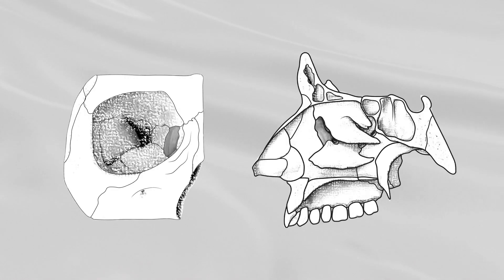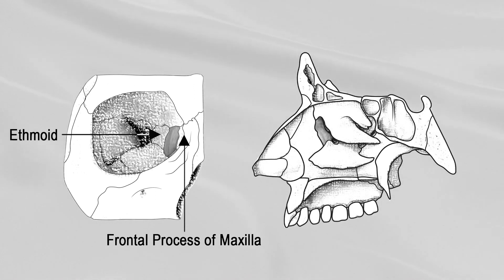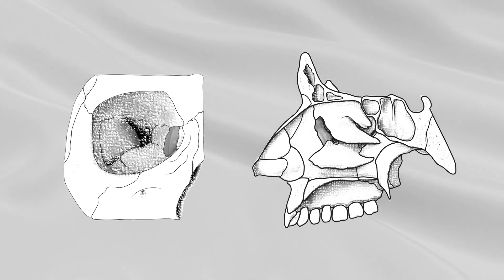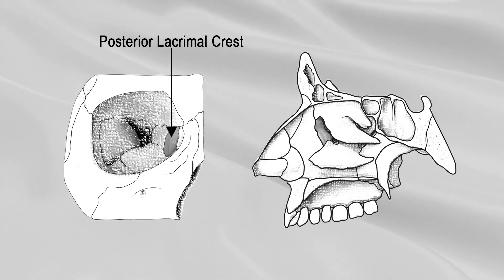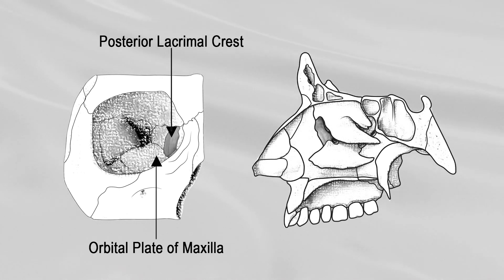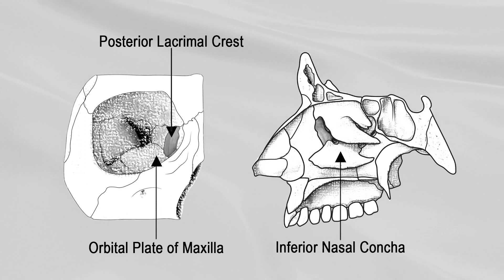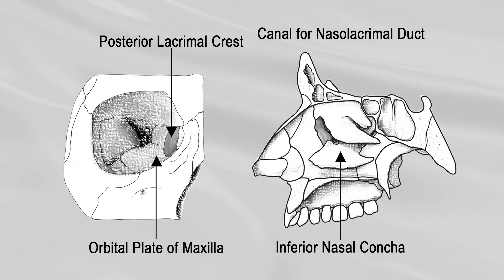BORDERS. Of the four borders, the anterior articulates with the frontal process of the maxilla, the posterior with the ethmoid, and the superior with the frontal bone. The inferior is divided by the lower edge of the posterior lacrimal crest into two parts. The posterior part articulates with the orbital plate of the maxilla. The anterior part articulates with the lacrimal process of the inferior nasal concha and assists in forming the canal for the nasolacrimal duct.